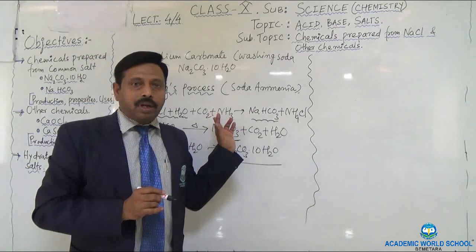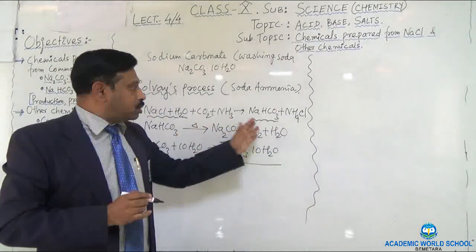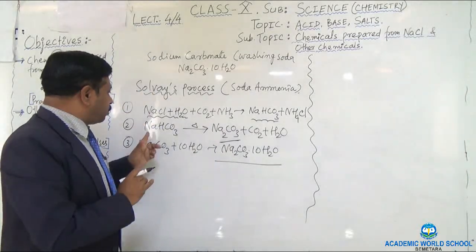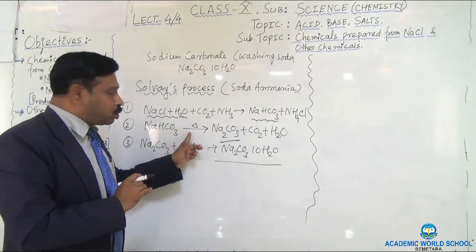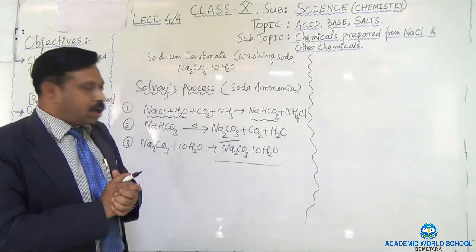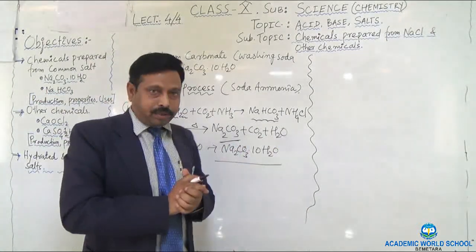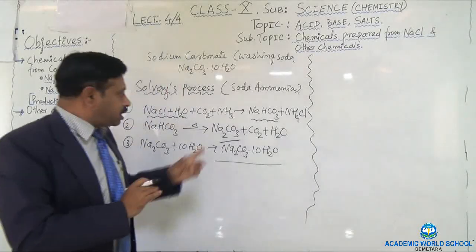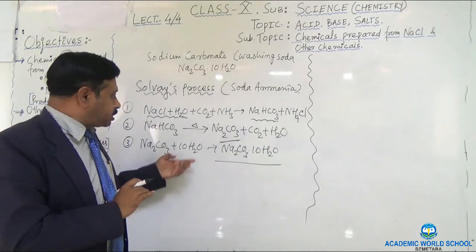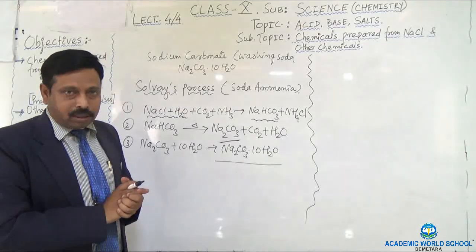Ammonia gas and carbon dioxide gas are passed through the brine solution to prepare sodium bicarbonate, which is baking soda. The baking soda is then decomposed by heating to give sodium carbonate (Na₂CO₃) plus carbon dioxide and water. This sodium carbonate then undergoes crystallization, where 10 water molecules are added, giving Na₂CO₃·10H₂O.